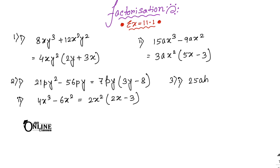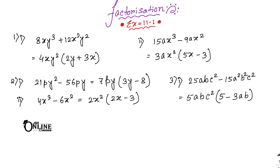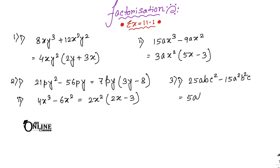Sum number 3.1: 25abc² - 15a²b²c². The HCF of 25 and 15 is 5. For the variables, always write down the smallest power: a, b, and c². So the common factor is 5abc. Inside the bracket: 5c minus 3ab. The answer is 5abc(5c - 3ab).